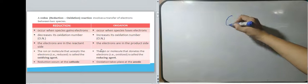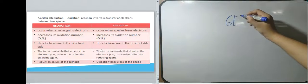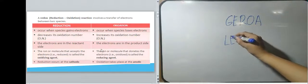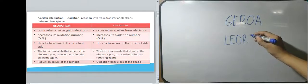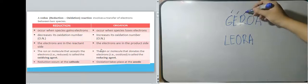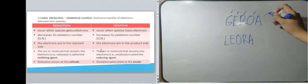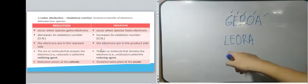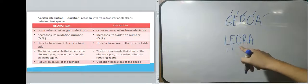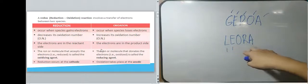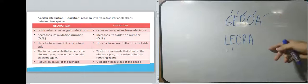So we have here a technique. We have here GEROA and LEORA. Gain electron reduction oxidizing agent. Again, gain electron reduction oxidizing agent. While this one is lose electron oxidation reducing agent. Again, lose electron oxidation reducing agent. So you just need to memorize GEROA and LEORA.